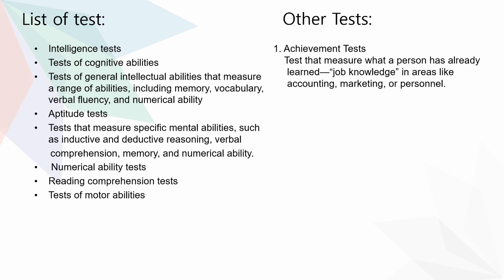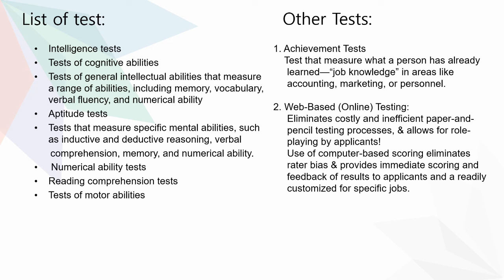Other tests include achievement tests — tests that measure what a person has already learned. Second, web-based or online testing eliminates costly and inefficient paper-and-pencil testing processes and allows for role playing by applicants. Use of computer-based scoring eliminates rater bias and provides immediate scoring and feedback of results to applicants, and tests are readily customized for specific jobs. Thank you.